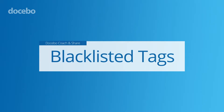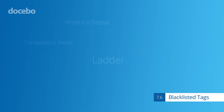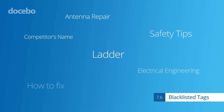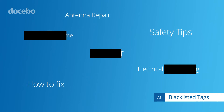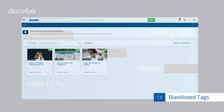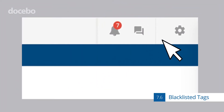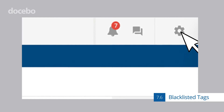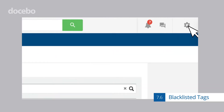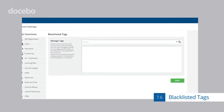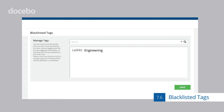For admins, a new blacklist tag feature allows you to exclude tags that have been generated by AI-based auto-tagging, in addition to our existing profanity filter. Admins can save their blacklist, and any blacklisted tags will not only be removed from future learning assets, but also from those that already exist in their platform.